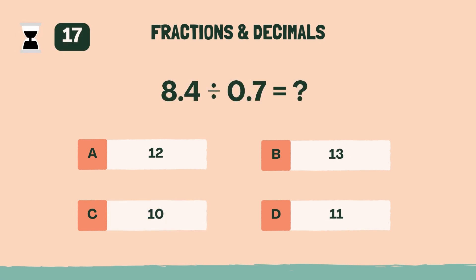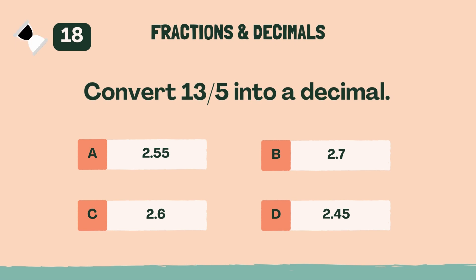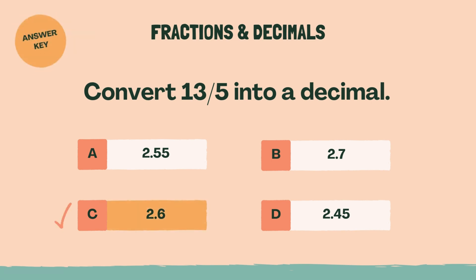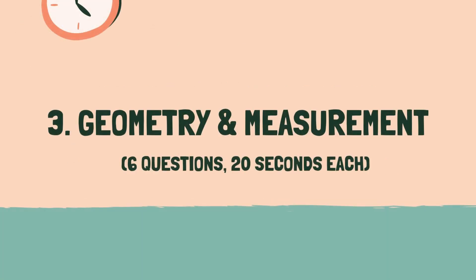What is 8.4 divided by 0.7? The answer is A, 12. Convert 13 fifths into a decimal. The answer is C, 2.6. You're doing great — time for the next category. Category 3: Geometry and Measurement.